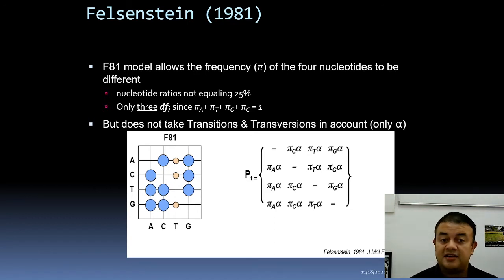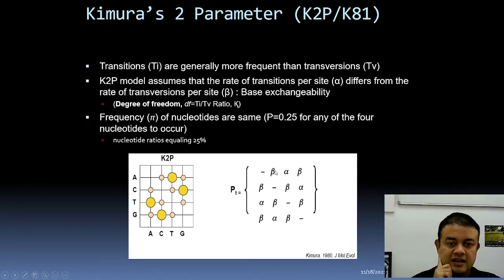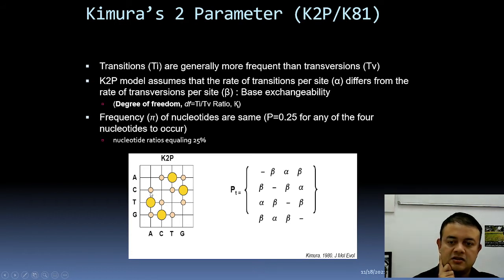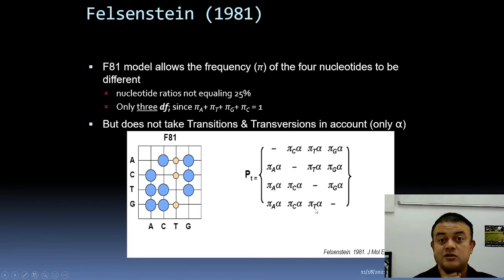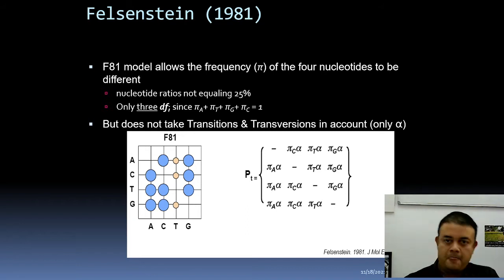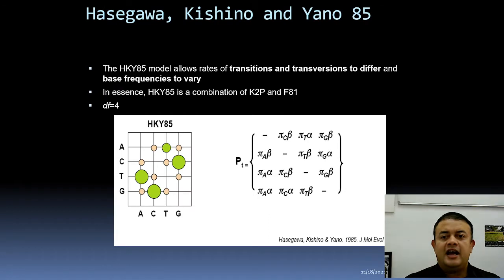F81 does not account for transitions and transversions separately — only alpha is present, no beta. In contrast, Kimura's two-parameter K2P has both alpha and beta. In the Q-matrix, alpha has a bigger probability than beta. In F81 everything is the same rate, but frequencies pi_A, pi_C, pi_G, and pi_T can change. The degree of freedom is three.